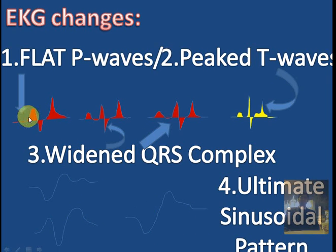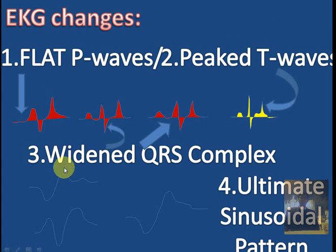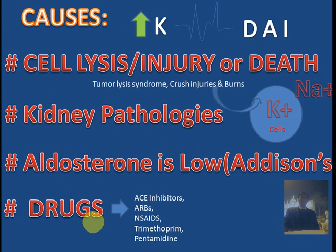So these are the main EKG changes: you have flat P-waves, peaked T-waves, widening of QRS complexes, and ultimately a sinusoidal pattern of the EKG. That covers EKG changes and causes.